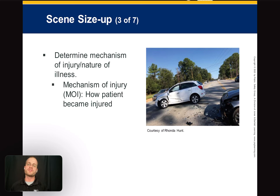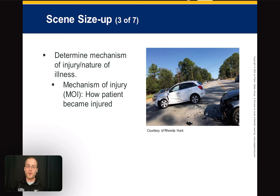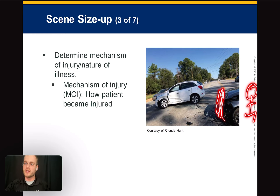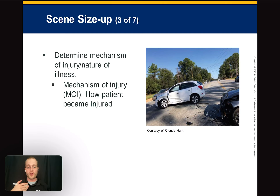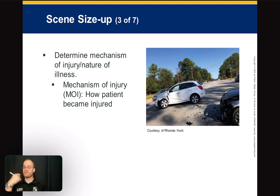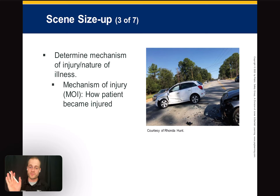The mechanism of injury (MOI) is how the patient became injured. In a T-bone collision, the patient on the impact side is definitely hurt more — there's only a door and a side curtain airbag protecting them, versus the other driver who had an engine block, crumple zone, windshield, airbags, and a frontal seatbelt. We have to think through those differences to anticipate injuries.